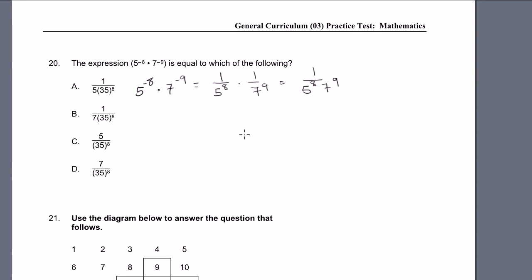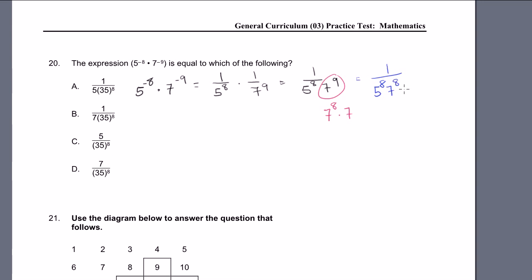And that's not one of our answers. Somehow we have to multiply the 5 and the 7, and the way we can do that is by having the same exponent. So let me rewrite 7 to the 9th — I can rewrite that as 7 to the 8th power times 7. So then our whole expression becomes 1 over 5 to the 8th times 7 to the 8th times 7. I just rewrote 7 to the 9th as 7 to the 8th times 7.